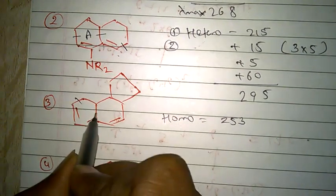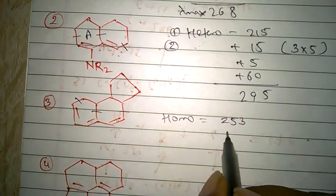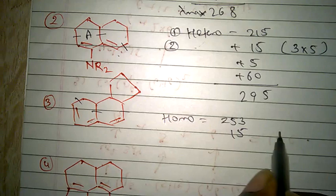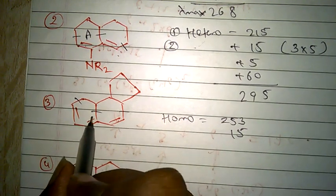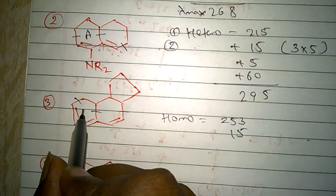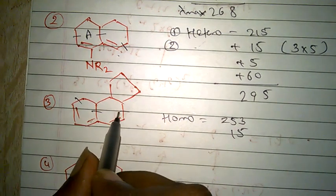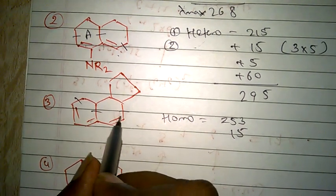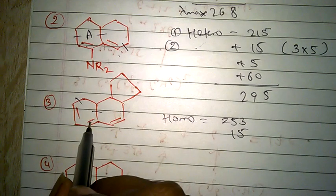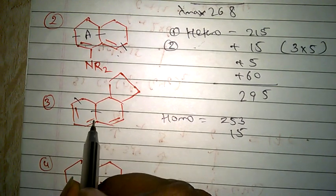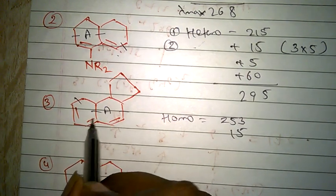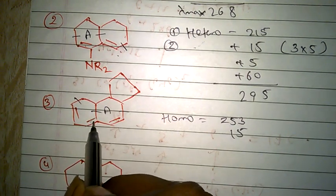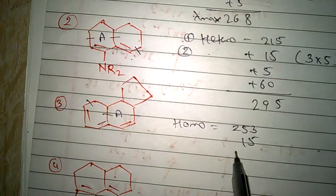Then ring residues: 1, 2, 3. Add 15, because for one ring residue it's 5. There are 3 ring residues, multiply by 3, we get 15. Then after that, see this ring has an outside double bond, exocyclic double bond, then add 5.